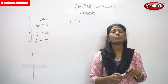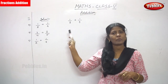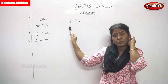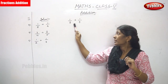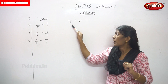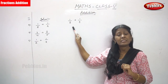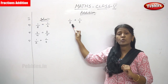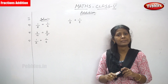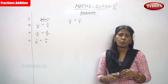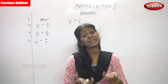To find the LCM, you have to write the multiples of the particular denominators. For this question, 1 by 8 plus 1 by 4 — 8 is a denominator, so you have to write the multiples of 8. The next one, you have to write the multiples of 4.